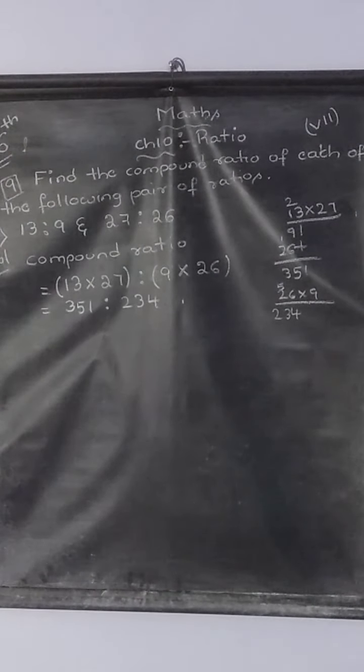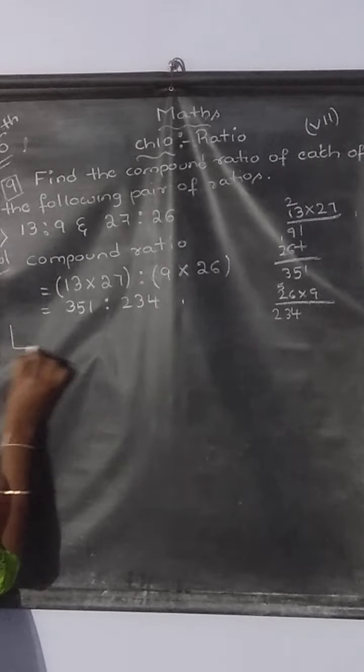See, it is a very big ratio. So we just want to convert it into its simplest form or the lowest form. How to do it? That is HCF method children.